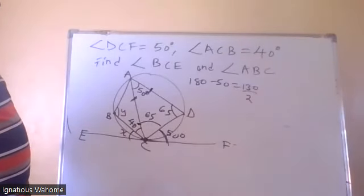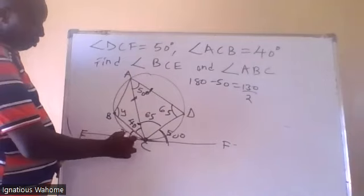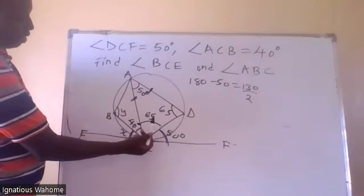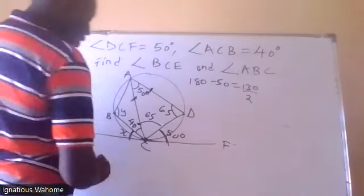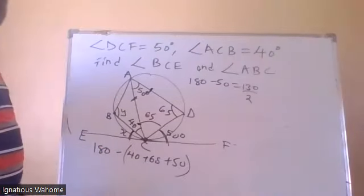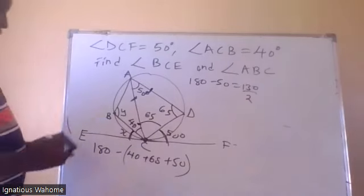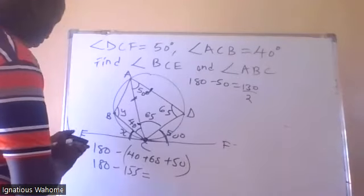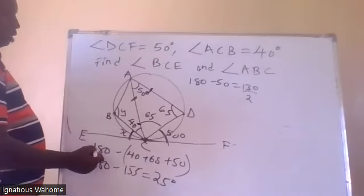Let's go to this question: find angle BCE. This angle here. If this angle is 40, this is 65, and this is 50, then angle BCE will be 180 minus (40 plus 65 plus 50). You add all of them and subtract: 40 plus 65 plus 50 gives 155. 180 minus 155 gives 25 degrees. So the value of angle BCE is 25 degrees.